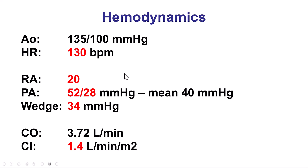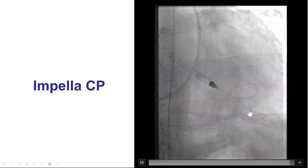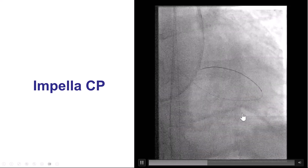However, the patient remained tachycardic although his blood pressure was maintained. So we decided to do a right heart catheterization, in which he had an RA pressure of 20, PA of 52 over 28, a wedge of 34, and most importantly, his cardiac index was only 1.4. So the patient was in cardiogenic shock — that's why he was obtunded and not responding very well. As a result, we placed hemodynamic support with an Impella CP device, following which he went to the intensive care unit.